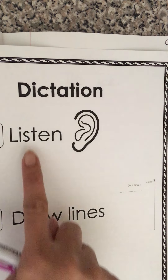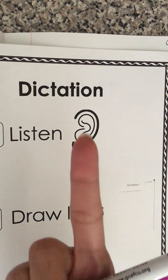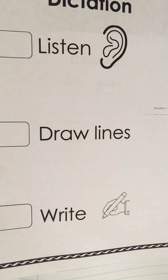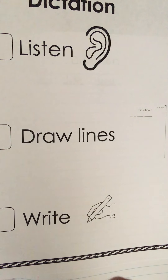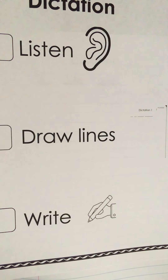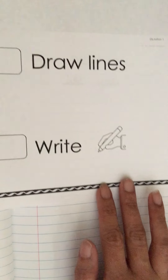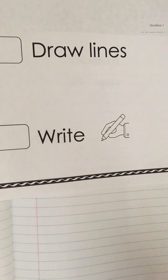That's what dictation looks like. The three steps for dictation are: first, listening — listening to the sentence and counting the words; second, draw the lines — once you've listened and counted the number of words, you draw the lines; and third, write the words — we finally get to write the words in the sentence, always making sure we begin with a capital letter and end with punctuation.